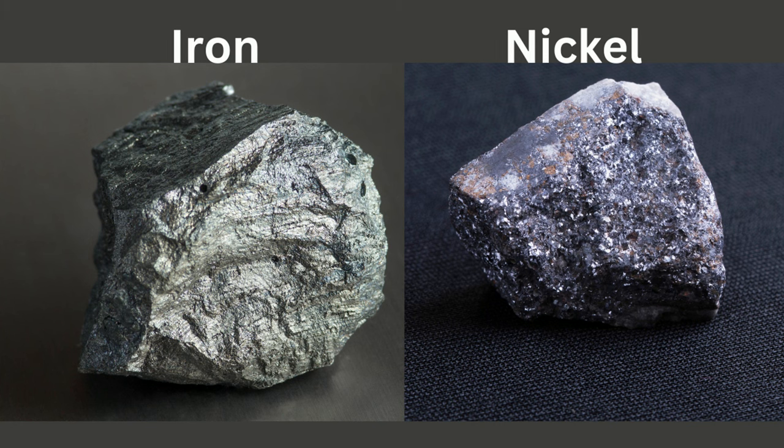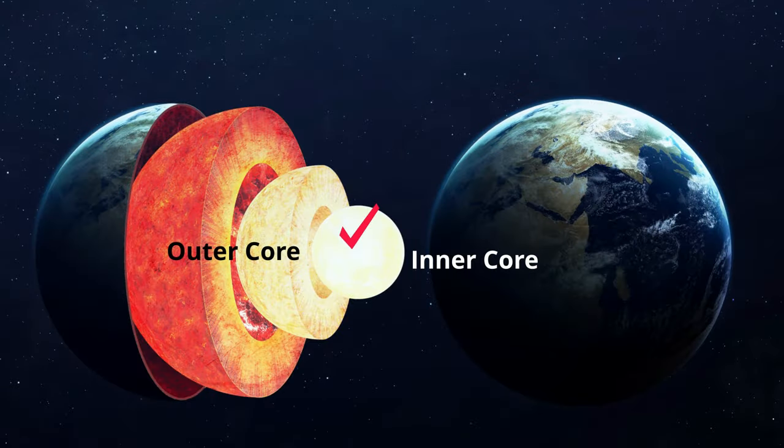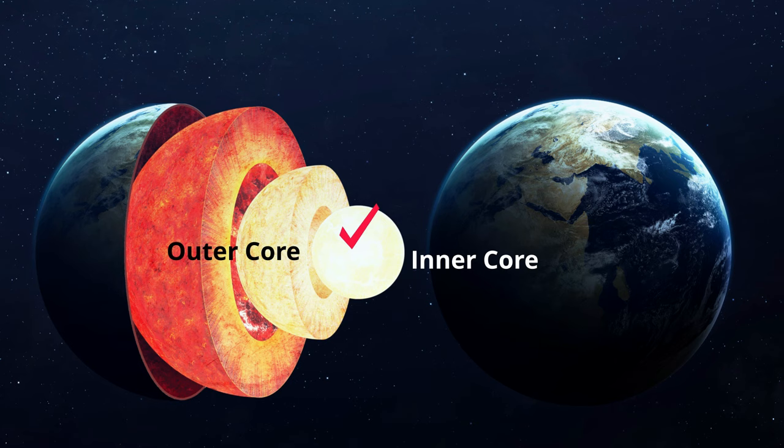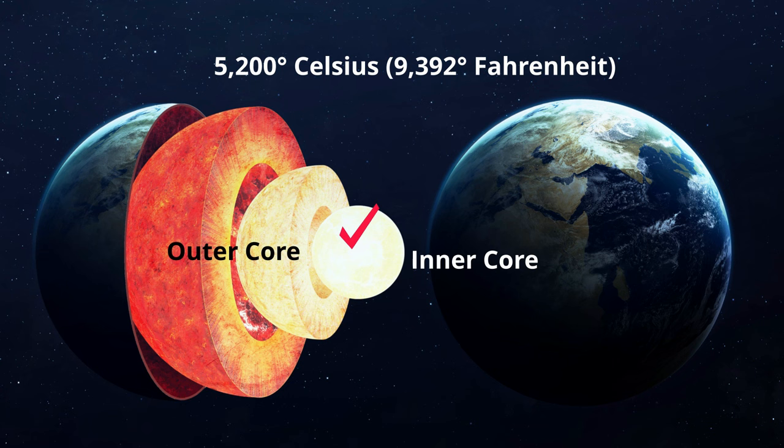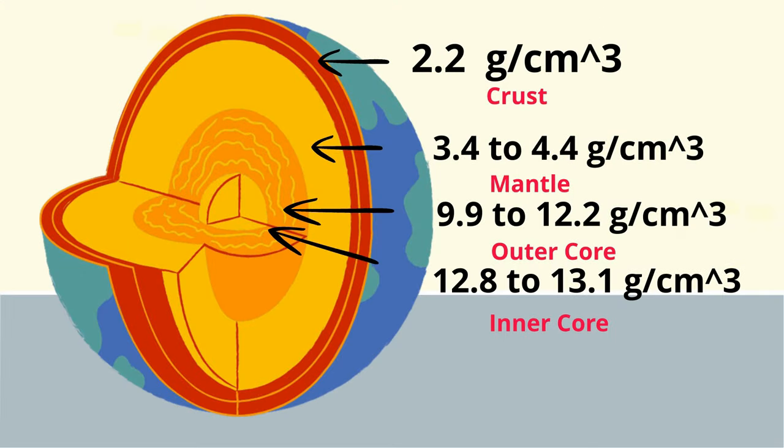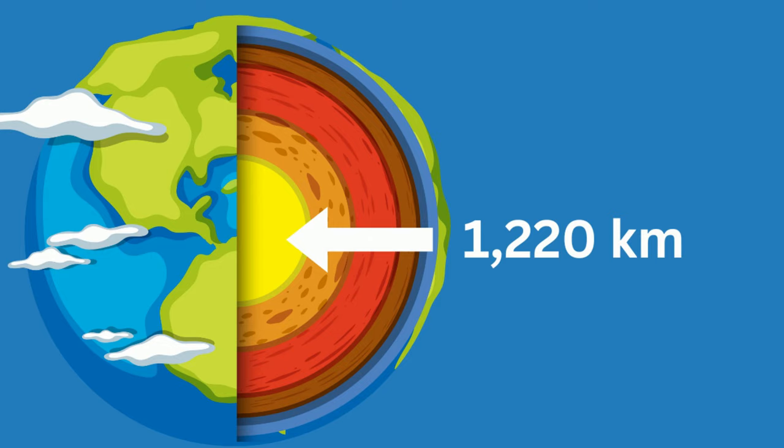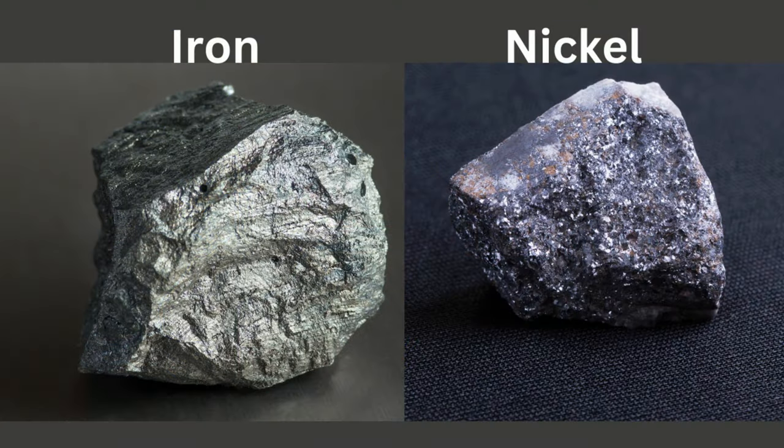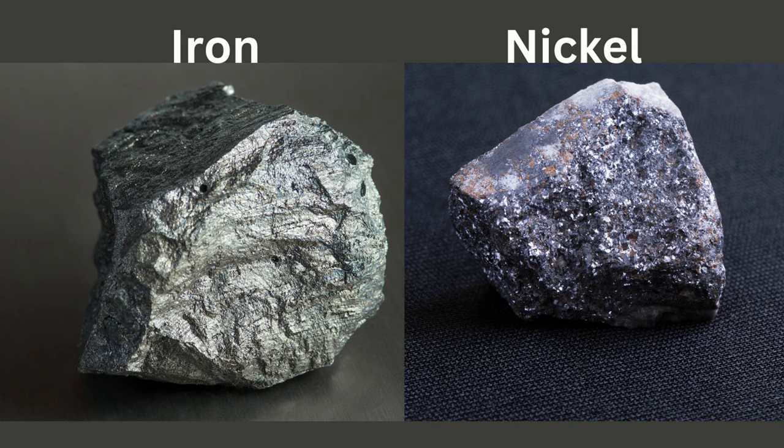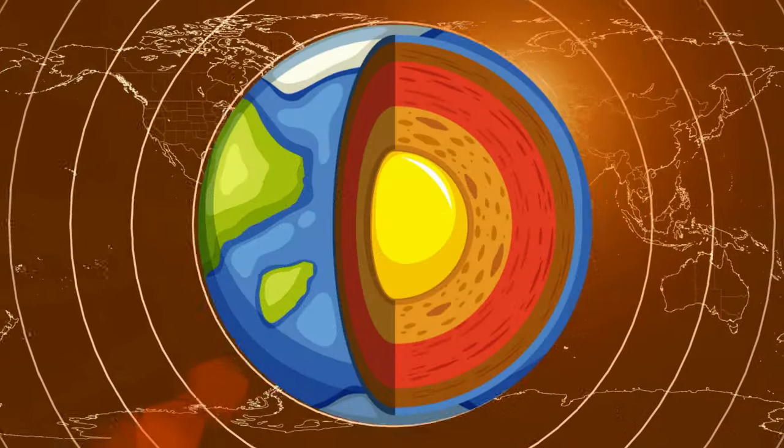And finally, you have the inner core, which is the hottest section of the Earth. It ranges in temperature around 5,200 degrees Celsius. It has the greatest density, and it ranges from 12.8 to 13.1 grams per centimeters cubed. It has a thickness of roughly 1,200 kilometers, and it's made up mostly of iron and nickel. I hope that helps with the layers of the Earth.